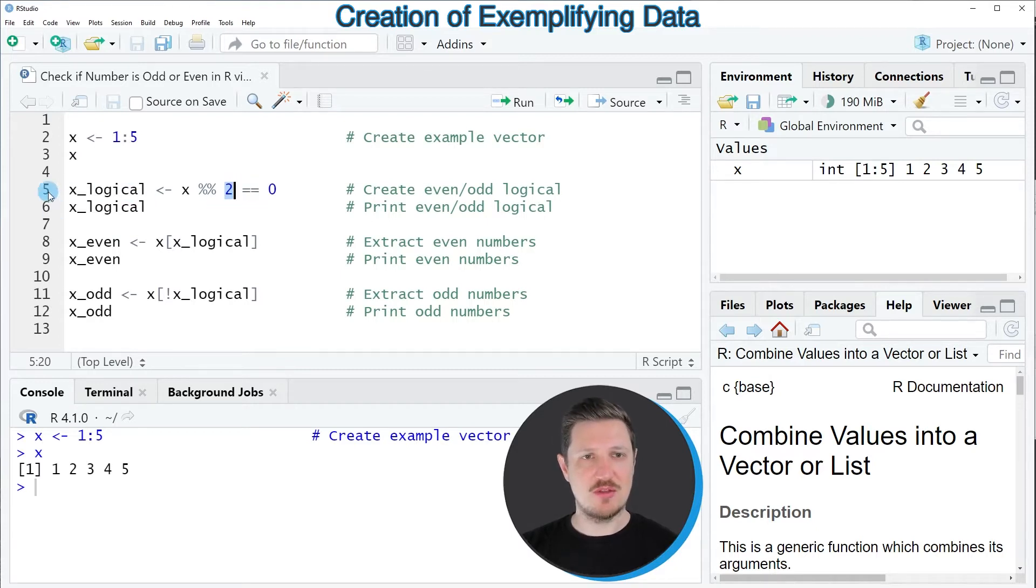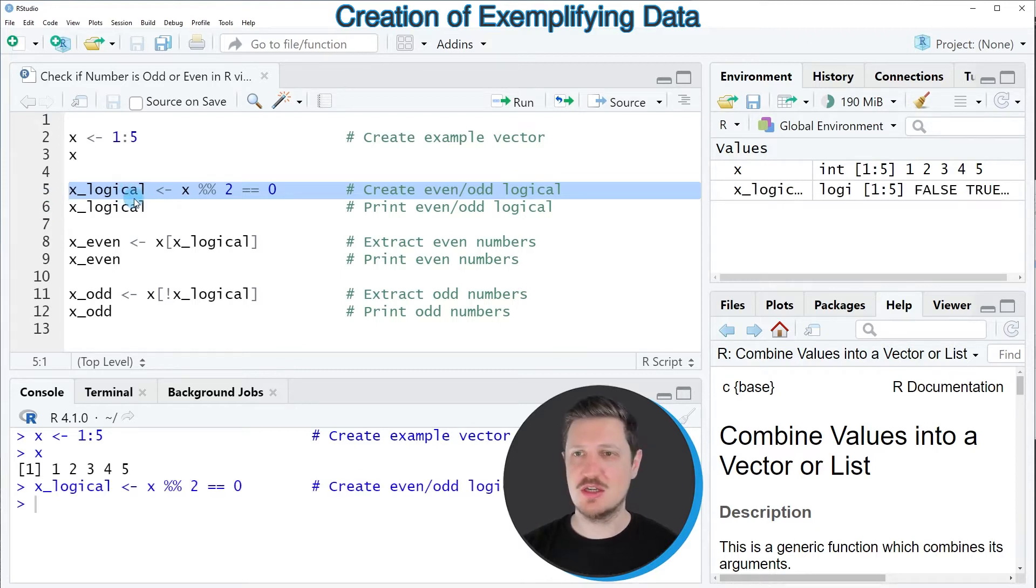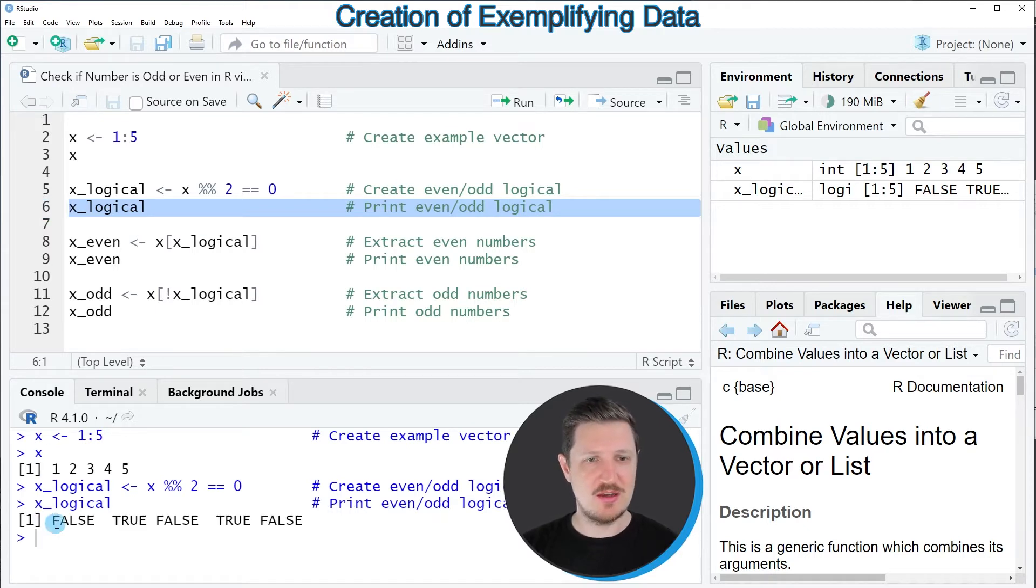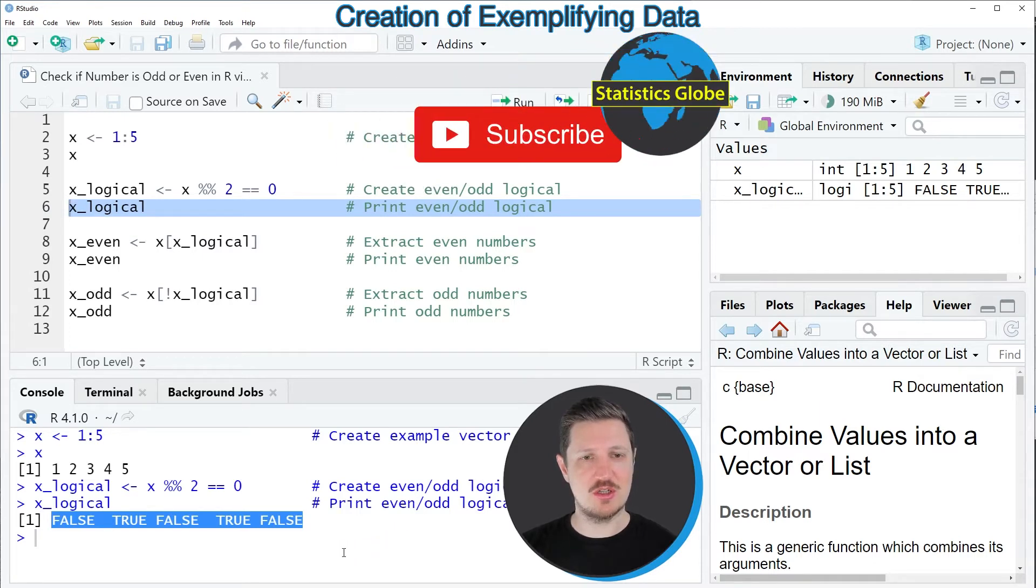After running this line of code, a new data object called x_logical is created. This data object also appears at the top right, and we can print it to the RStudio console by running line 6. You can see that we have created a logical vector containing the logical indicators FALSE, TRUE, FALSE, TRUE, FALSE.